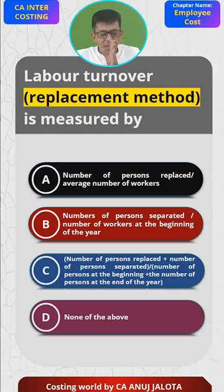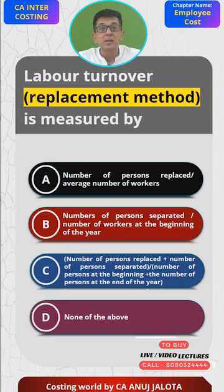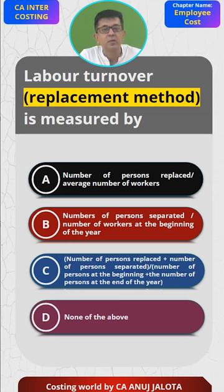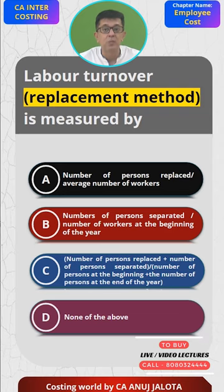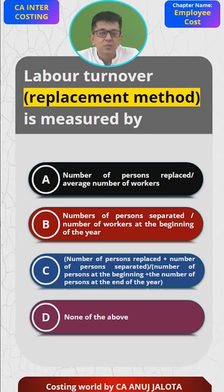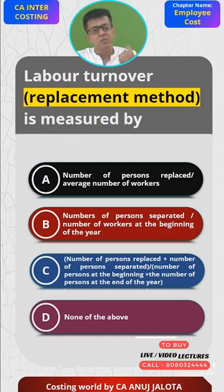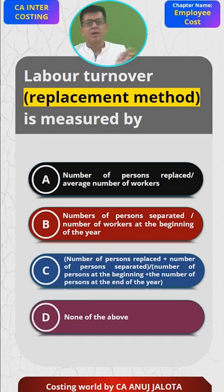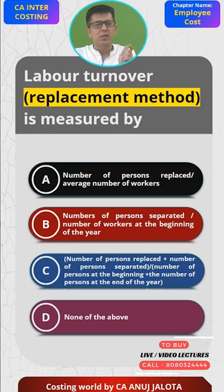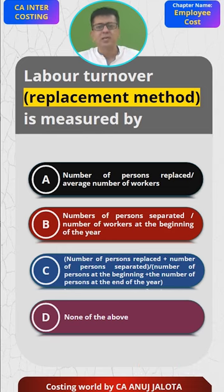Then you have the replacement method — those workers who left, and in place of them how many were recruited; those are your replacements. That is the replacement method. The third option is the flux method. Under the flux method, it is the addition of the above two, that is separation plus replacement. Its formula is: number of workers separated plus replaced, divided by average number of workers, where average number of workers is workers at the beginning plus workers at the end, divided by two.